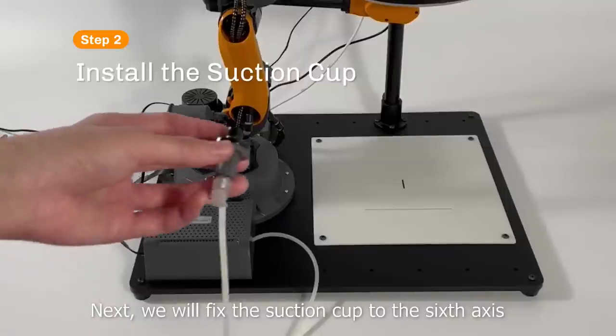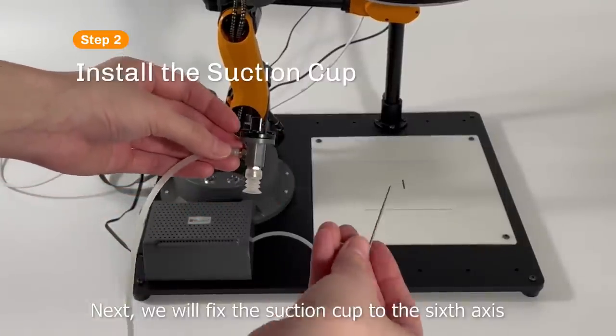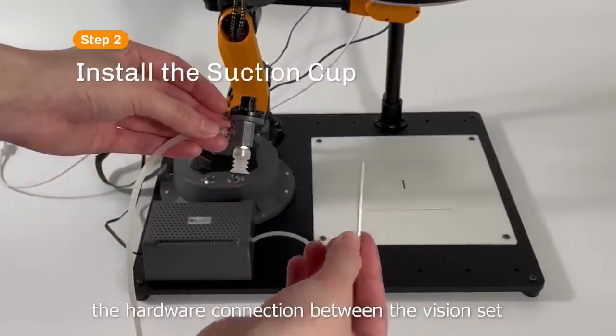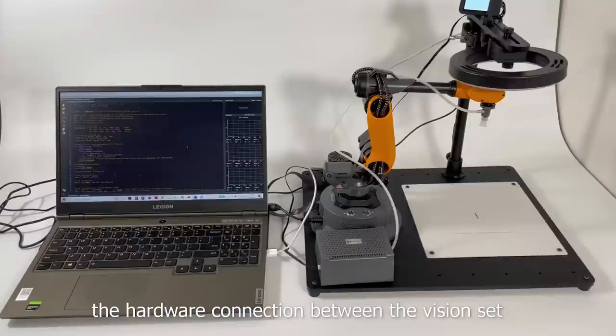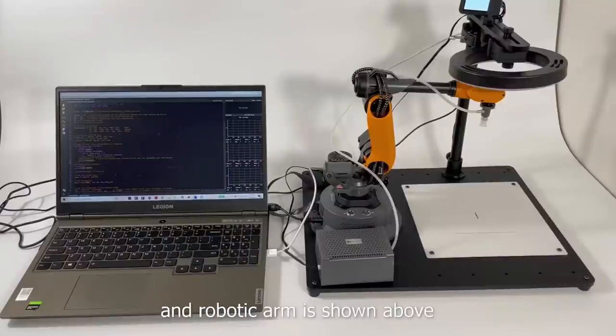Next, we will fix the suction cup to the 6th axis. After the setup, the hardware connection between the Vision Set and robotic arm is shown above.